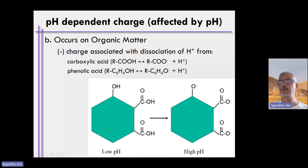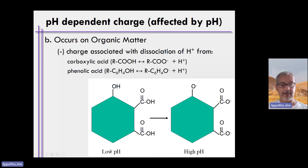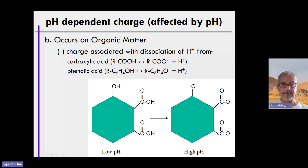You might have a carboxylic group or an OH group, or another type of organic functional group sticking out from the edge of some organic compound. Under low pH, there are plenty of free hydrogen ions in the soil solution associated with these functional groups. If you raise the pH, you remove the free hydrogen ions from these functional groups and end up with negative charges on the edges of the organic material.